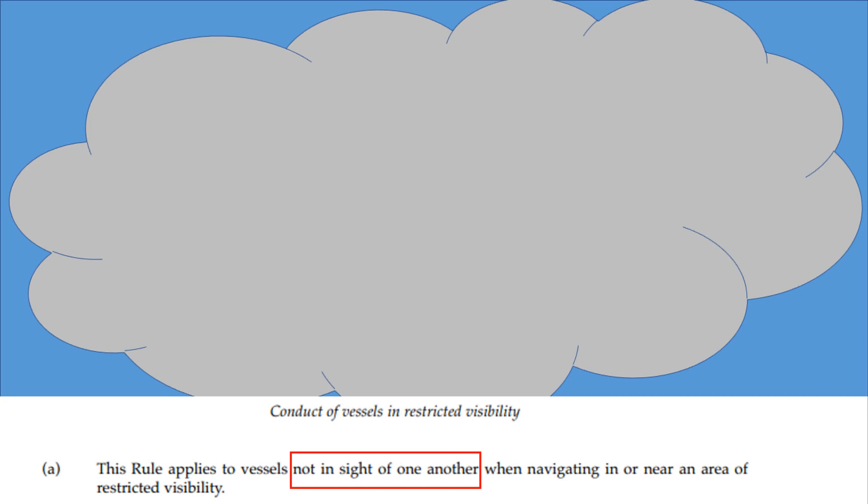In particular, the wording says vessels not in sight of one another. This means that Section 2 of the Steering and Sailing Rules do not apply in restricted visibility. That's a really big change to how we conduct the bridge of our vessel or skipper our leisure vessel. Basically, Section 2 rules do not apply means Rule 12 Conduct between sailing vessels doesn't apply. That means there's no such thing as port tack giving way to starboard tack, no such thing as windward vessel gives way to leeward vessel.